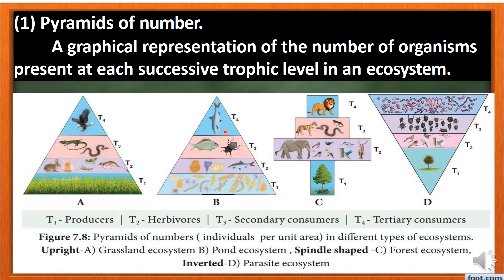Next is the forest ecosystem. In the forest ecosystem, there is a tree as the producer, next primary consumer, secondary consumer, and tertiary consumer. The number of organisms at the second level compared to the first level — the shape of this pyramid is spindle-shaped.